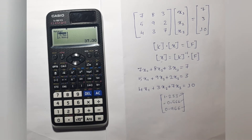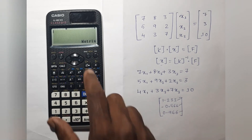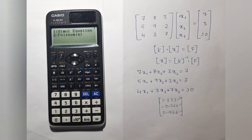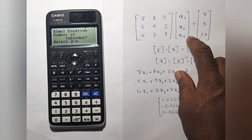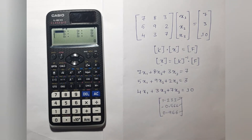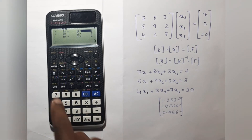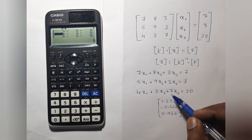You can also solve this kind of matrix using simultaneous equations. For that, go to the menu, scroll down and select Equations or Functions, then select Simultaneous Equations. We have three unknowns here: x1, x2, and x3. Select 3 and enter all the values — 7, 8, 3 equals 7. I have written this matrix in the form of a linear equation.